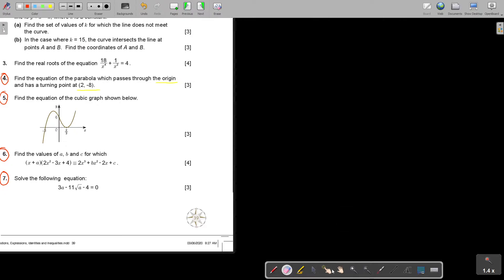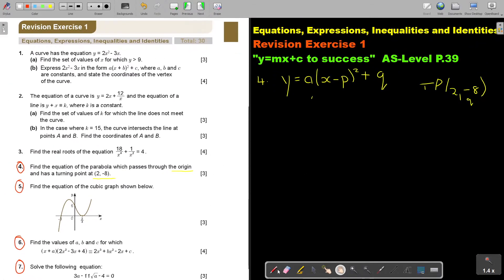Now we can go to number 5. Find the equation of the cubic graph. So it cuts at negative 3, and it cuts at 2 over 3. And there is the point also at 0 and 6. Now, I'm going to use this formula: Y is equal to A times one bracket and another bracket. And because it's a turning point, I will square it.